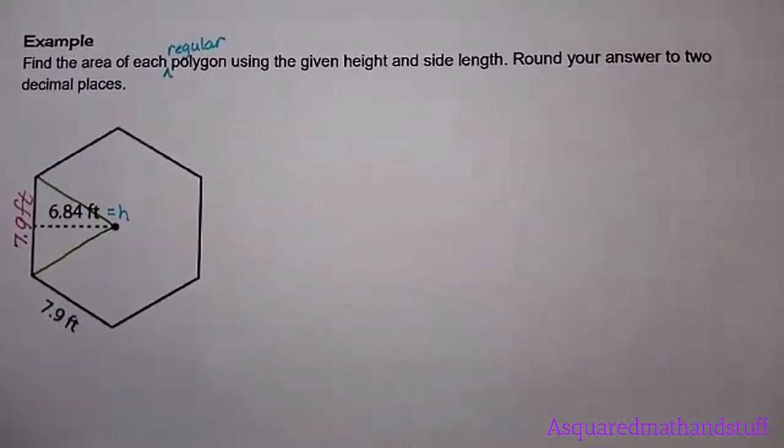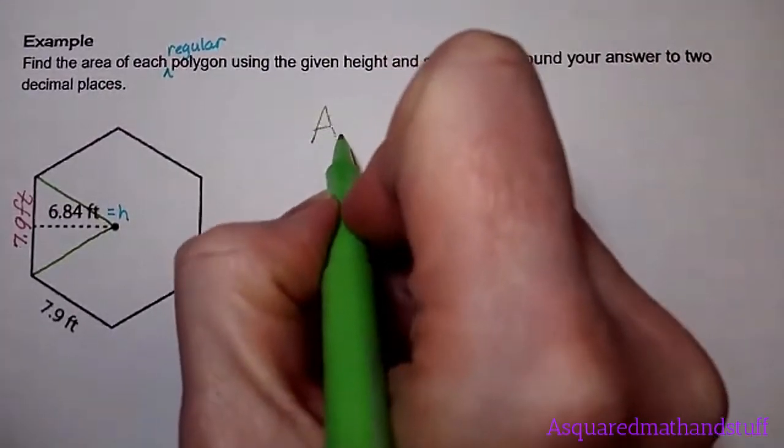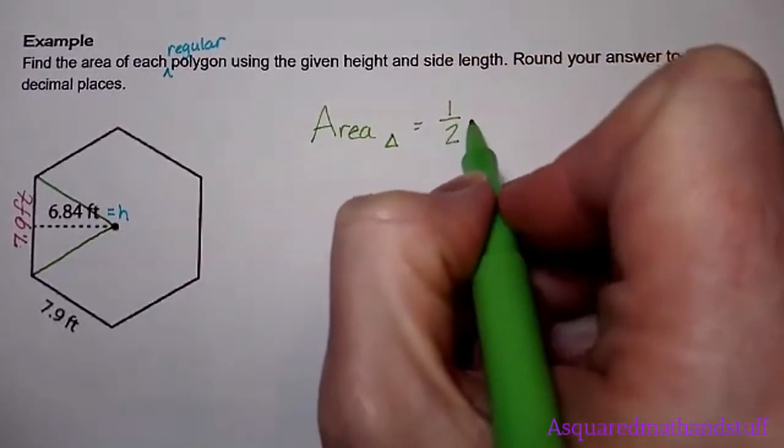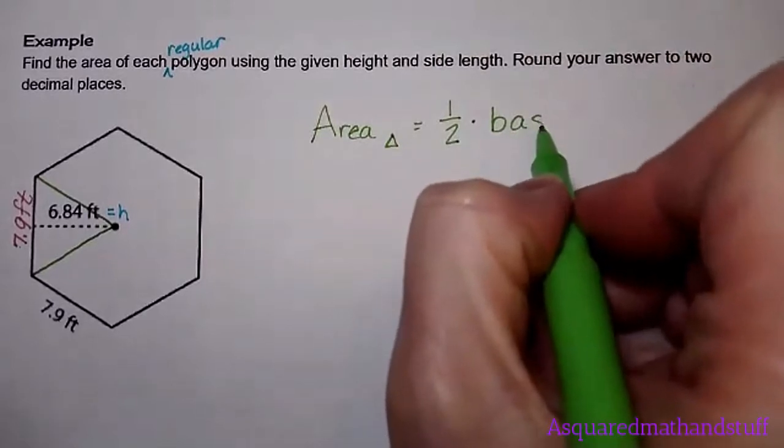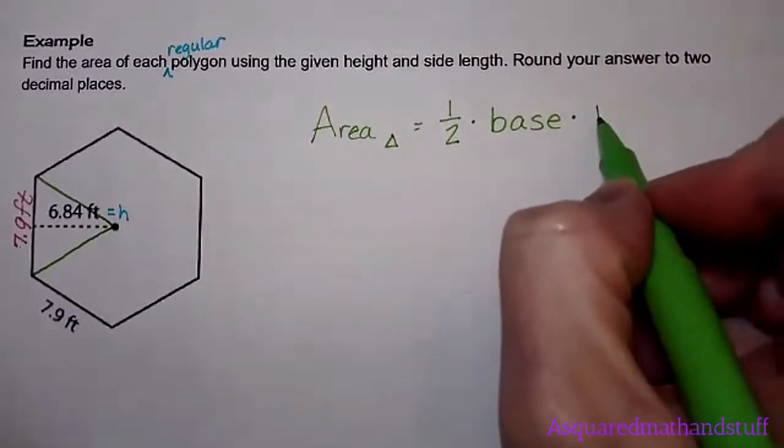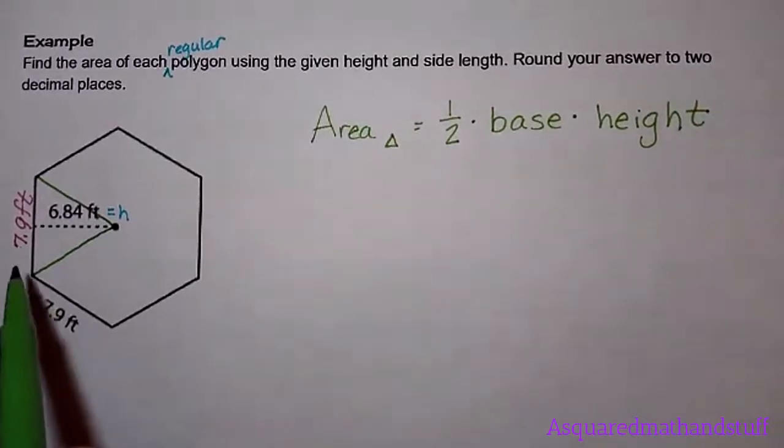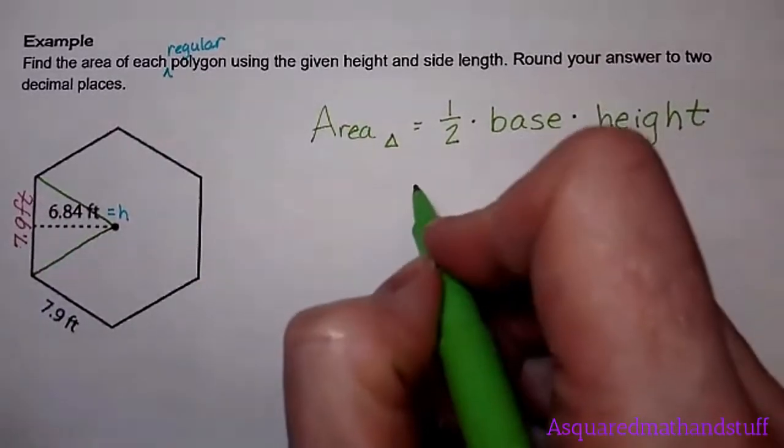We know the formula to calculate the area of a triangle. So area of a triangle is one-half times the base times the height. If I take this triangle and I redraw this all over here so we can see it in a position that we're more familiar with...